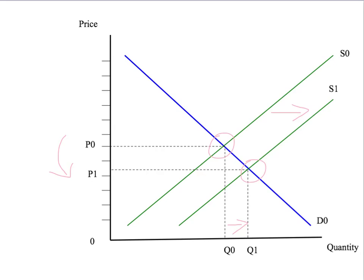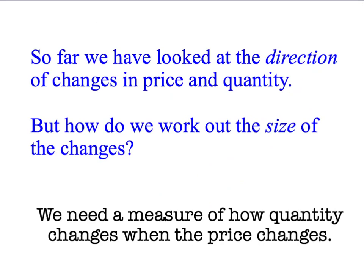But suppose we want to know more than simply the direction of change. For example, we might want to know how big is the increase in the quantity traded when the price level drops by, say, 1%. To work out how big the quantity change is going to be, we're going to need a measure of how quantity changes when the price changes — and that's going to be one of our elasticity measures. It's in fact going to be the own price elasticity.